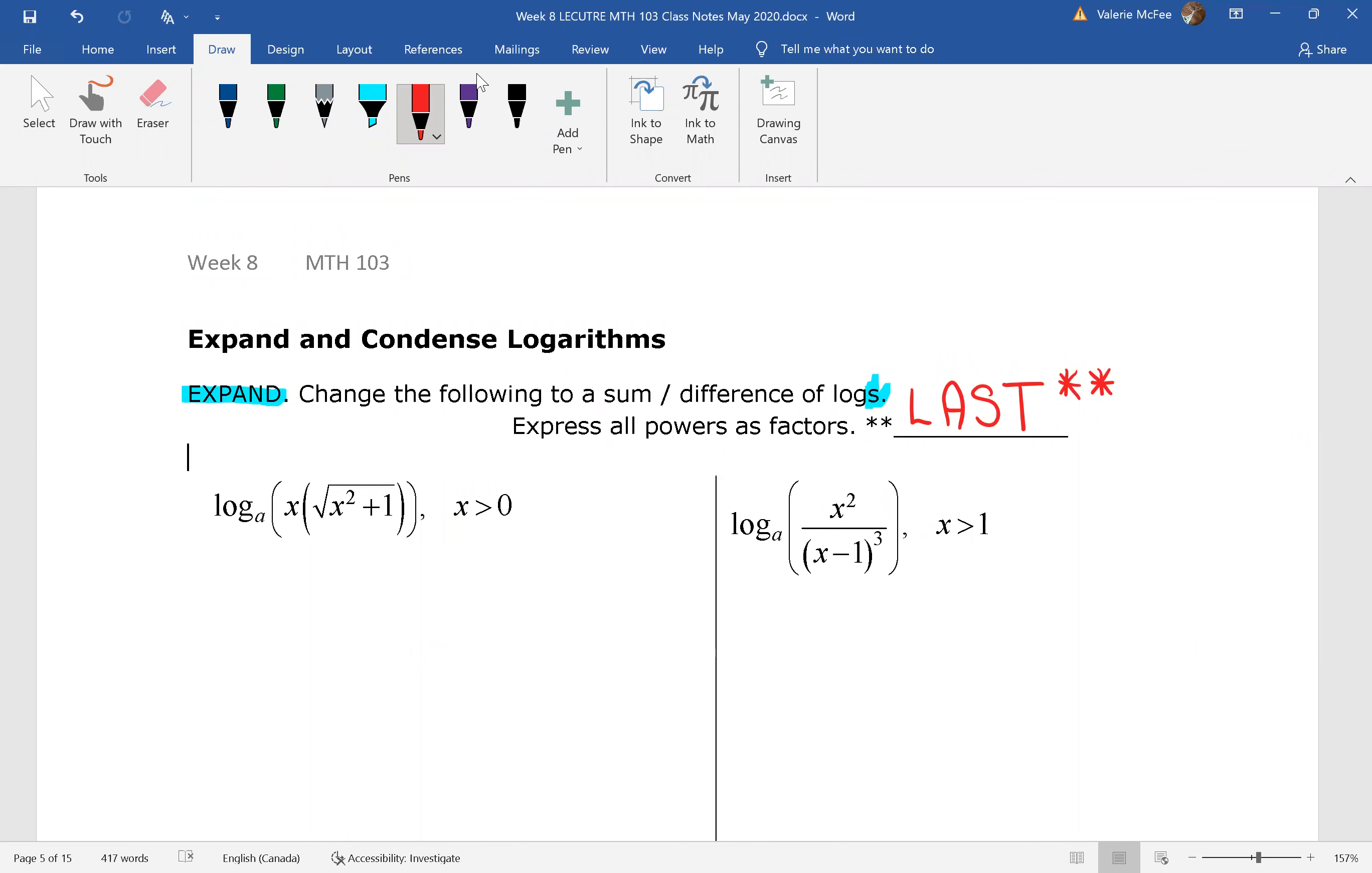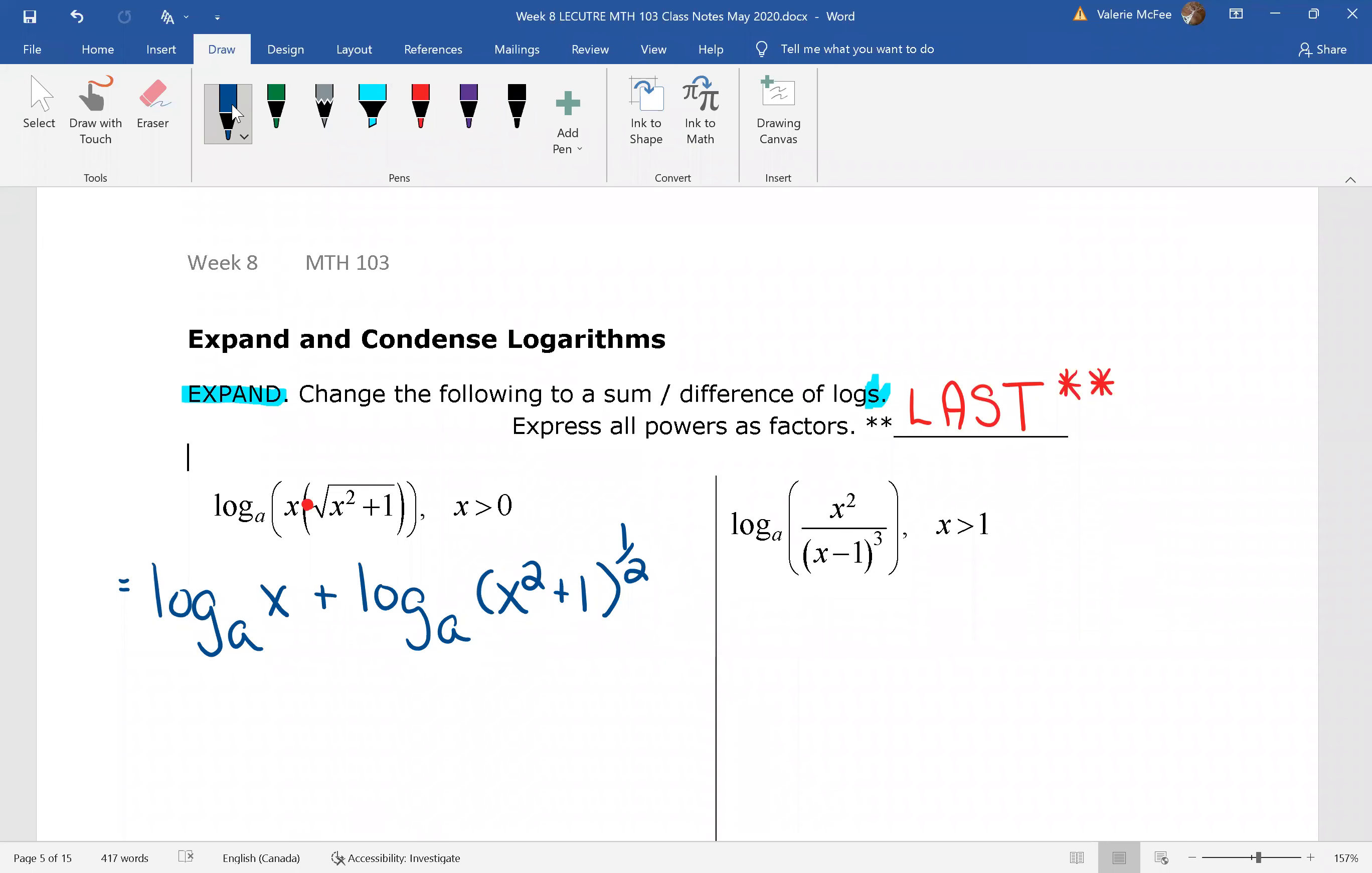Let's look at question one here. We have multiplication. We know that using the properties, we can write this as a sum of logarithms. The base stays the same for each of these. And notice that I've taken that square root sign and written it as a power of one half.